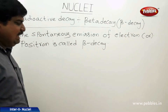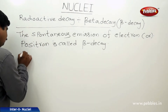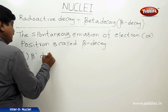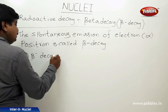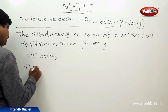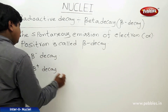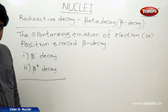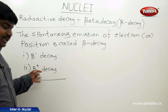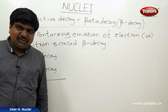Beta decay is again classified into two types: one is beta minus decay, and the second one is beta plus decay. We will now discuss both of these types.